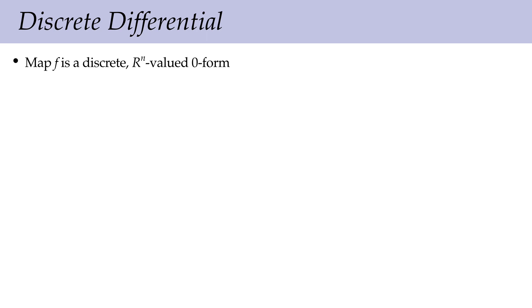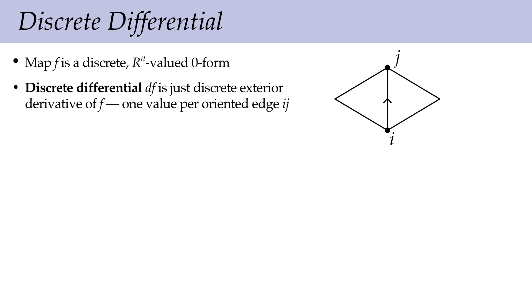In terms of discrete exterior calculus, the map f is an R^n-valued zero-form — an assignment to each zero-simplex of a point in R^3. The discrete differential df is then an R^n-valued one-form: a value per oriented edge. These values have a clear geometric meaning. If we differentiate this map, we get something meaningful geometrically — a discrete one-form represents the integral of a smooth one-form over each one-simplex.